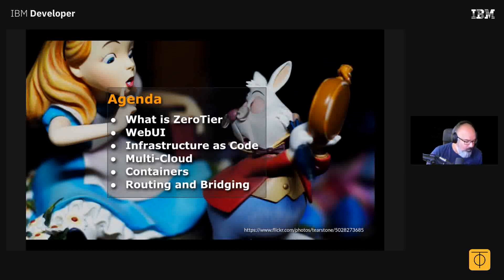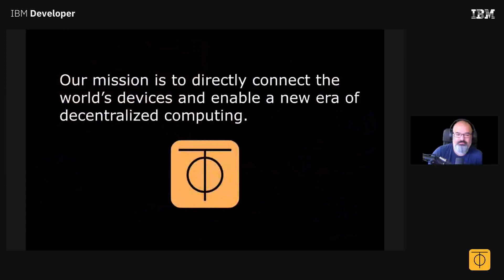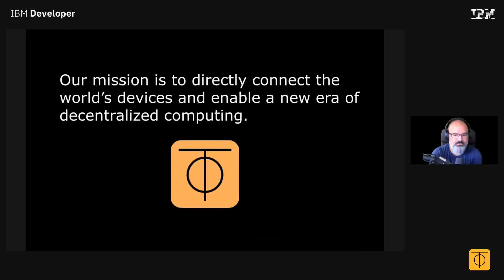So, ZeroTier — what is ZeroTier? Our mission is to directly connect the world's devices and enable a new era of decentralized computing. We kind of broke the internet about 20 years ago with the introduction of NAT devices. The proliferation of NAT has created a centralized internet, and we're trying to fix that. It makes no sense that if you're standing next to someone at a party and you send them a picture, that picture has to bounce off a data center on the other side of the continent and back. Computers should be able to communicate directly and securely.